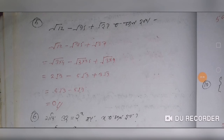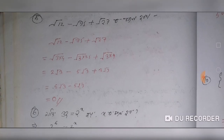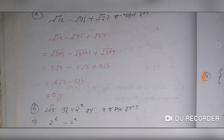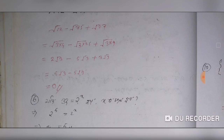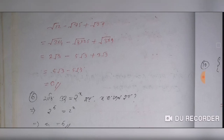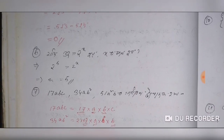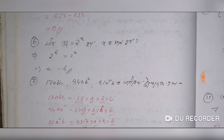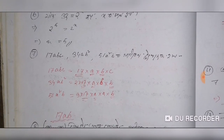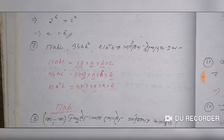The first thing I have asked is that root 2 minus root 75 plus root 27 — what is root 12? Root 12 is 3 into 4. Root 2 is 3 into 25. Root 2 is 5 into 25. Root 3 is 9 into 3. Root 3 is 32 into 2 to the power x. If it is 5 into 3, so this is 17abc, 34ab square and 51ab square.